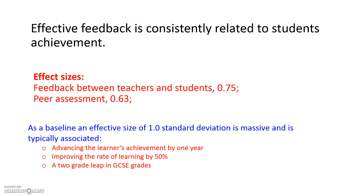If you look at effect sizes, 1.0 is massive, and it's typically associated with those kinds of improvements in attainment. So feedback is a pretty important achievement promoter.